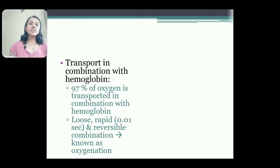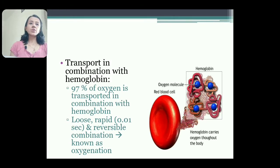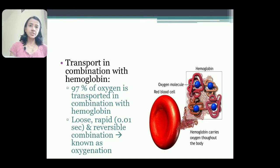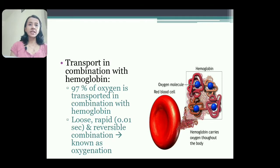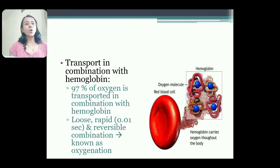The second form is transport in combination with hemoglobin — 97% of oxygen is transported in combination with hemoglobin. This is known as oxygenation, not oxidation. It is oxygenation because this transport is loosely bound, rapid — within 0.01 second oxygen binds with hemoglobin — and it is a reversible combination. Therefore it is known as oxygenation.